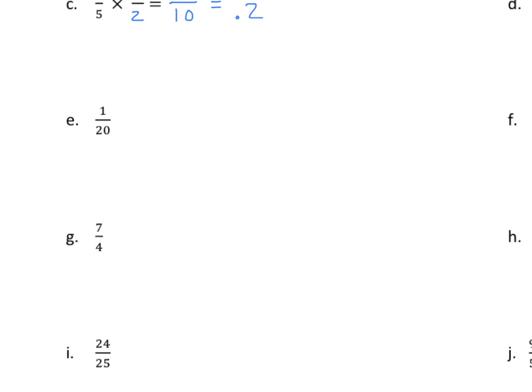Continuing with a little less scaffolding, we know we have to multiply by some fraction that will give us a denominator of 10, 100, or 1,000. We can't get 10 easily here, but what can I multiply 20 by to get 100? We know there are five 20s in 100, so we multiply by 5 fifths. 1 times 5 is 5, and 20 times 5 is 100, and that becomes the decimal 0.05, or 5 hundredths.